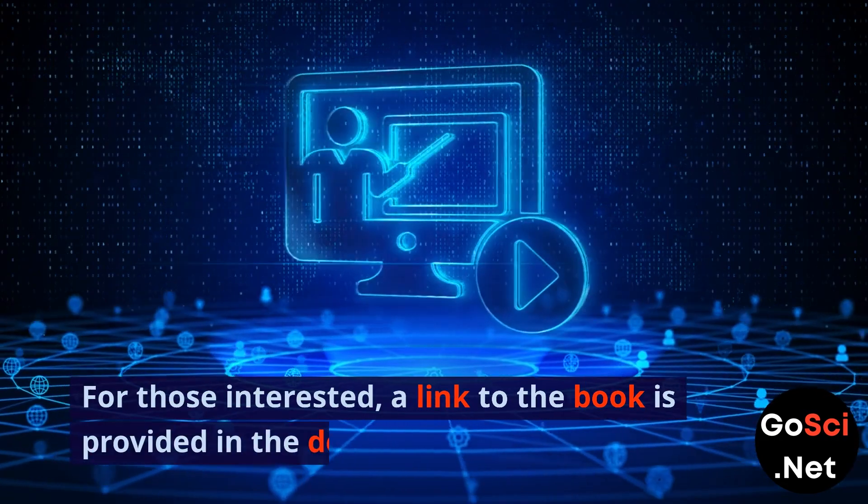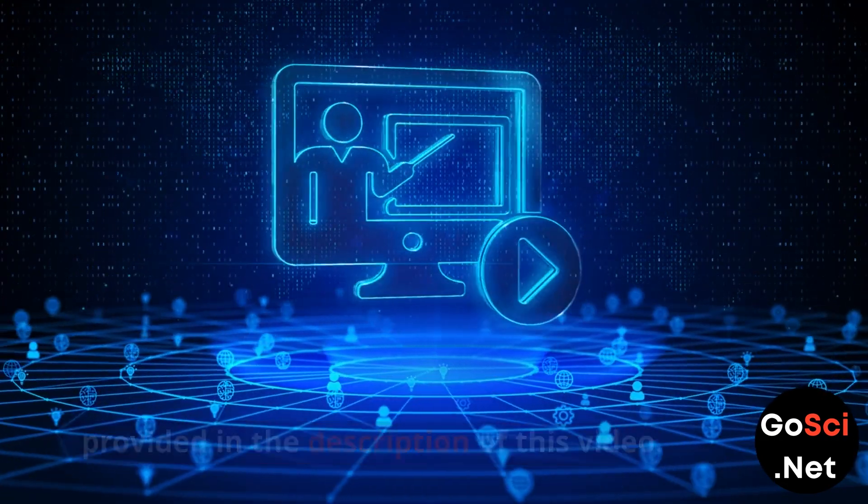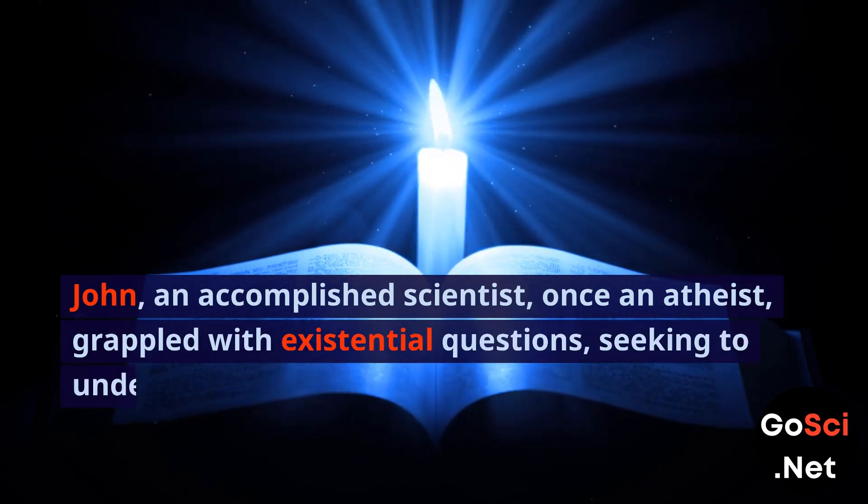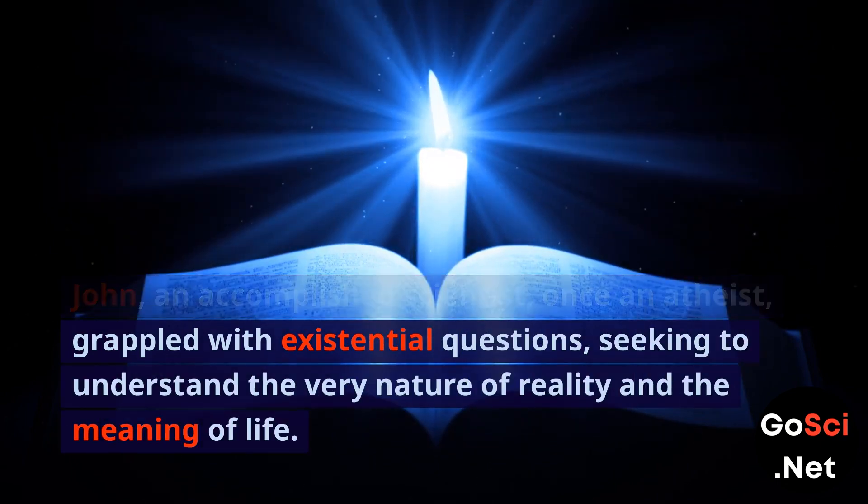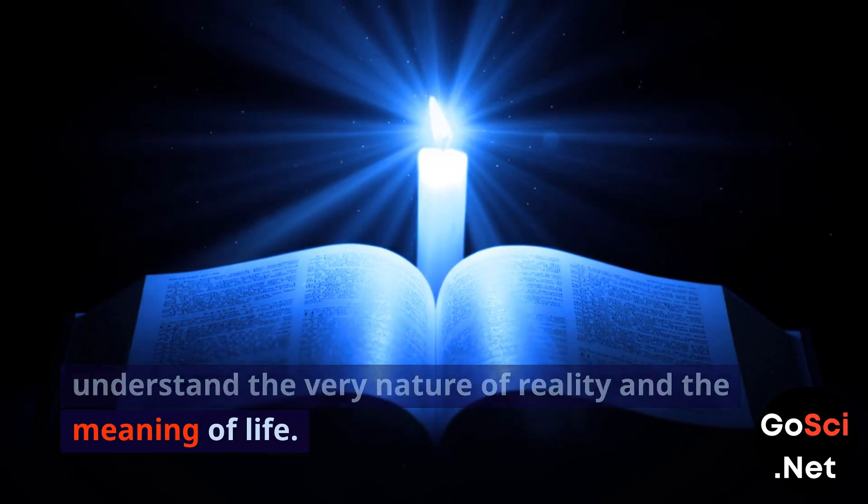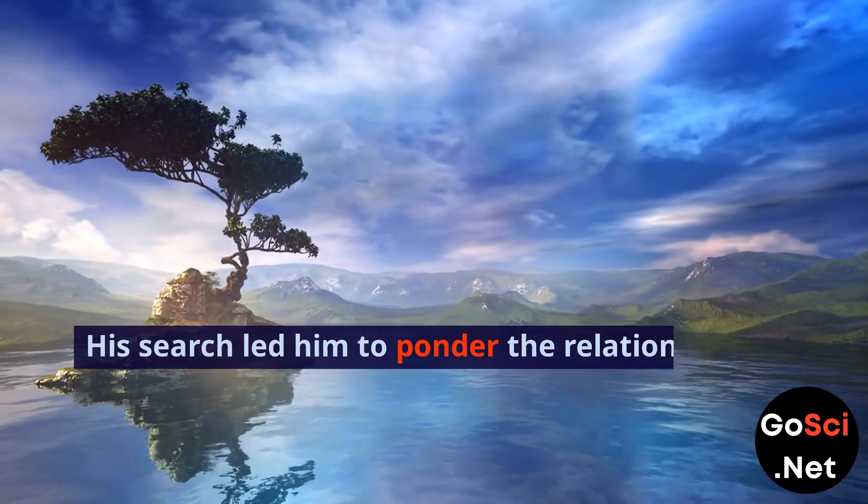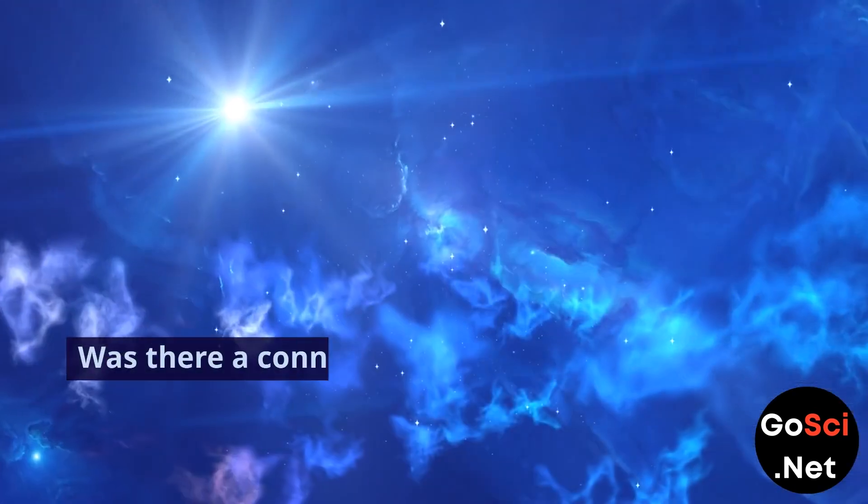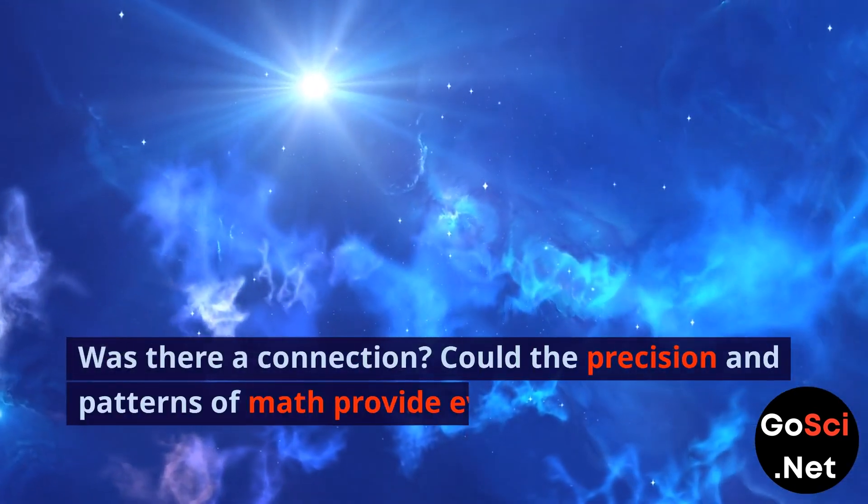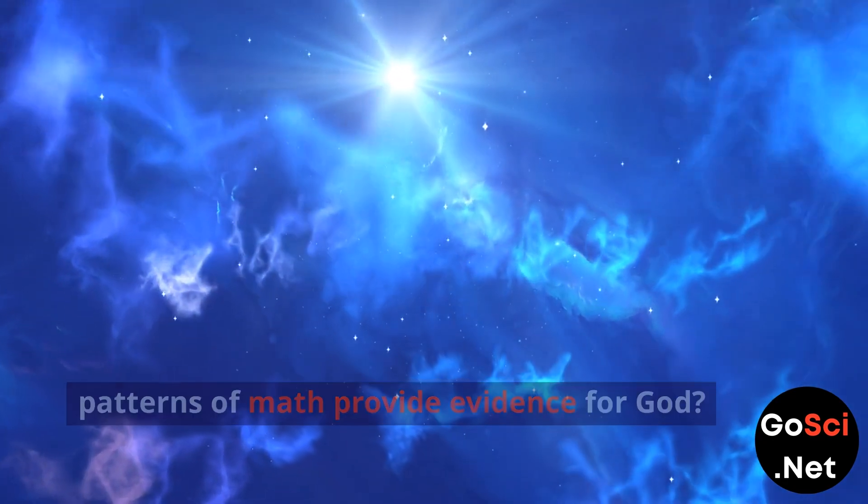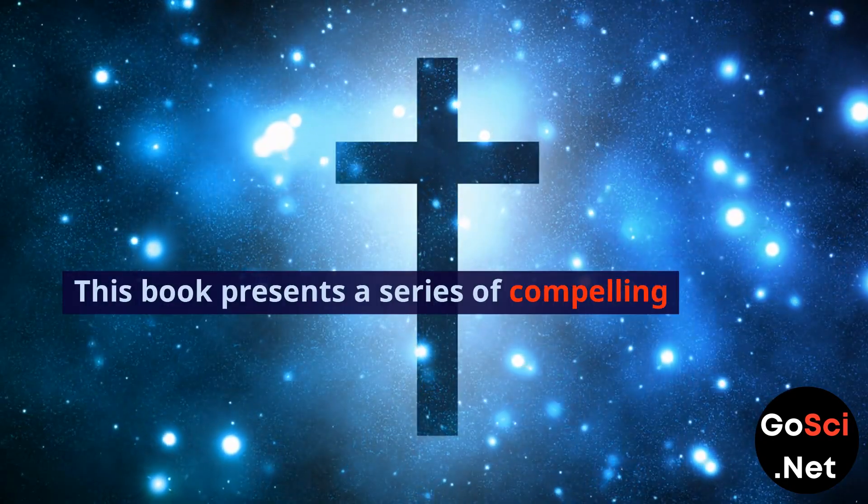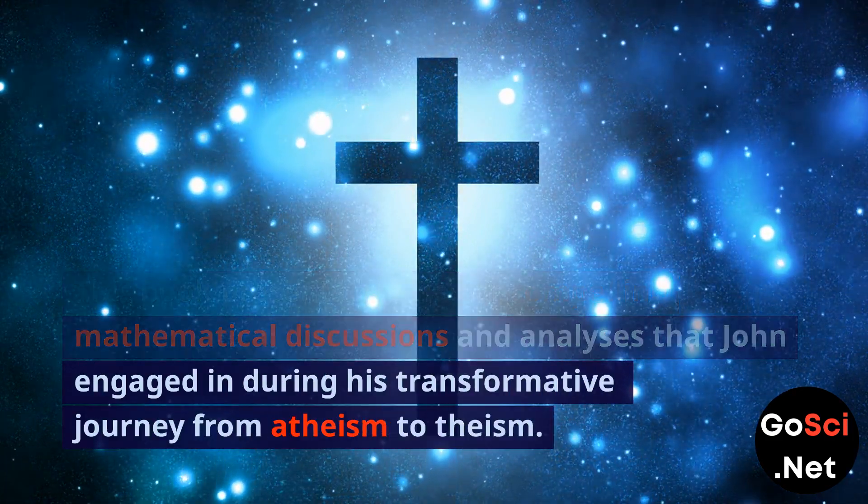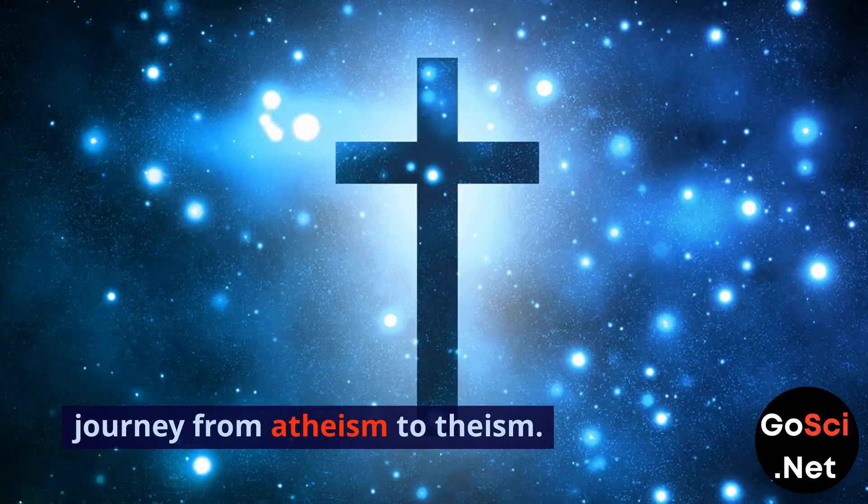For those interested, a link to the book is provided in the description. John, an accomplished scientist, once an atheist, grappled with existential questions, seeking to understand the very nature of reality and the meaning of life. His search led him to ponder the relationship between mathematics and the existence of God. Was there a connection? Could the precision and patterns of math provide evidence for God? This book presents a series of compelling mathematical discussions and analyses that John engaged in during his transformative journey from atheism to theism.